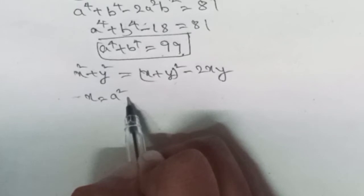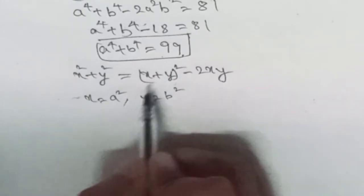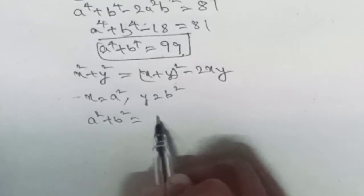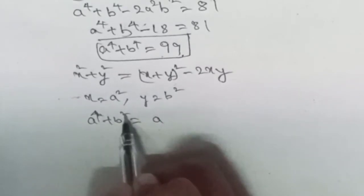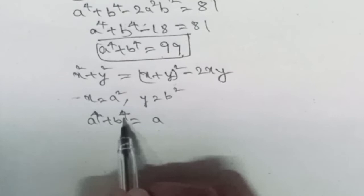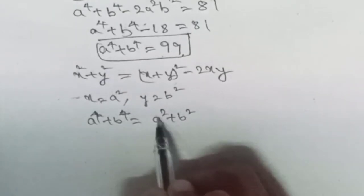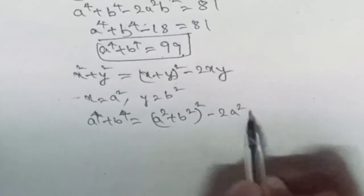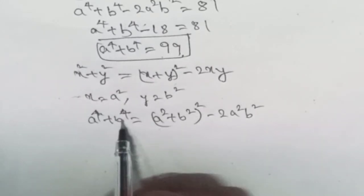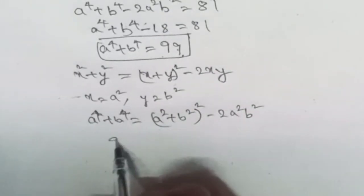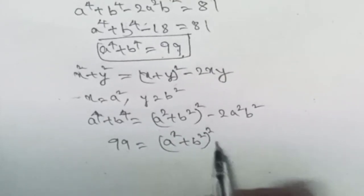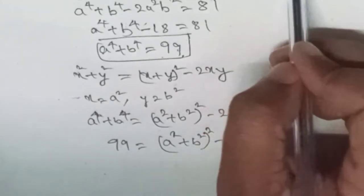With x equal to a squared and y equal to b squared, we plug these values in. So a squared plus b squared, whole square, equals a to the power of 4 plus b to the power of 4 plus 2a squared b squared. We have a to the power of 4 plus b to the power of 4 equal to 99. Plugging in: 99 equals a squared plus b squared whole square minus 2 times a squared b squared, and a squared b squared is 9.